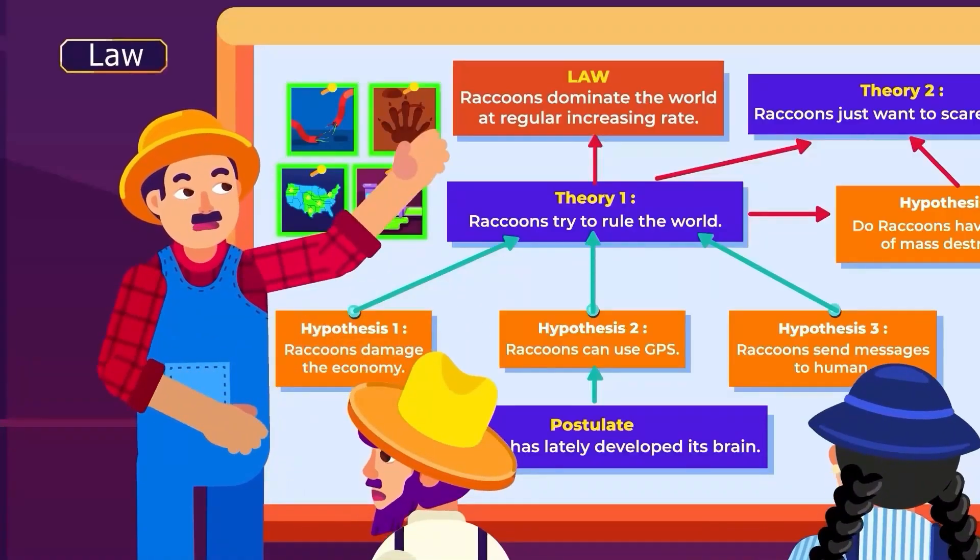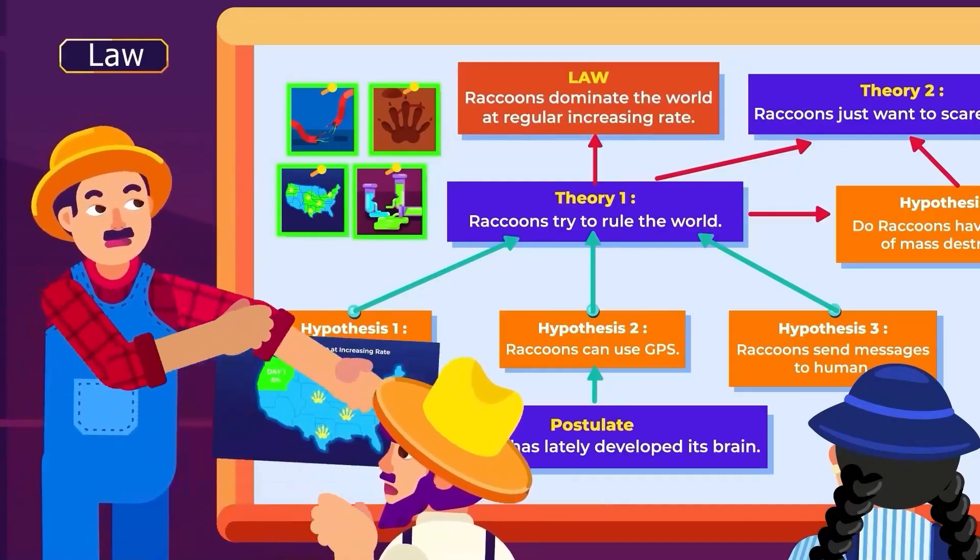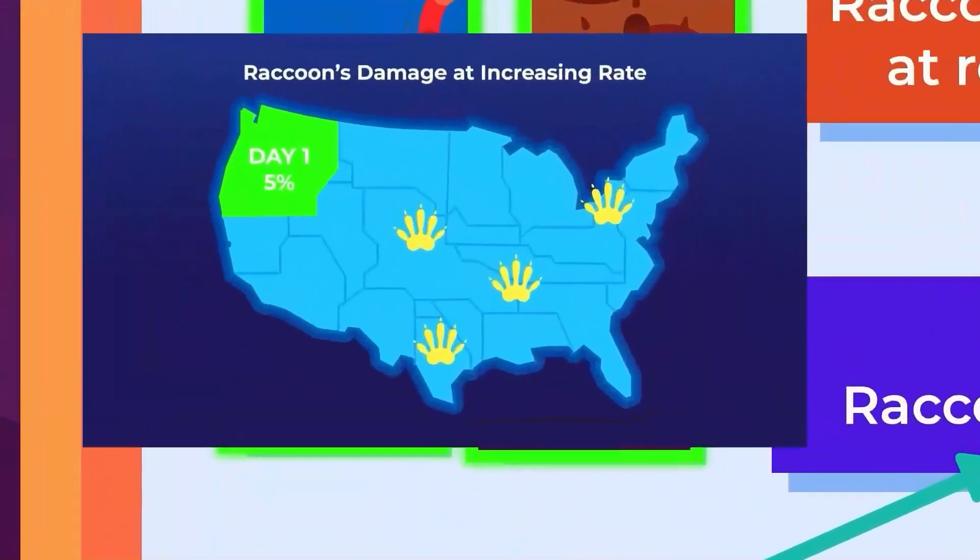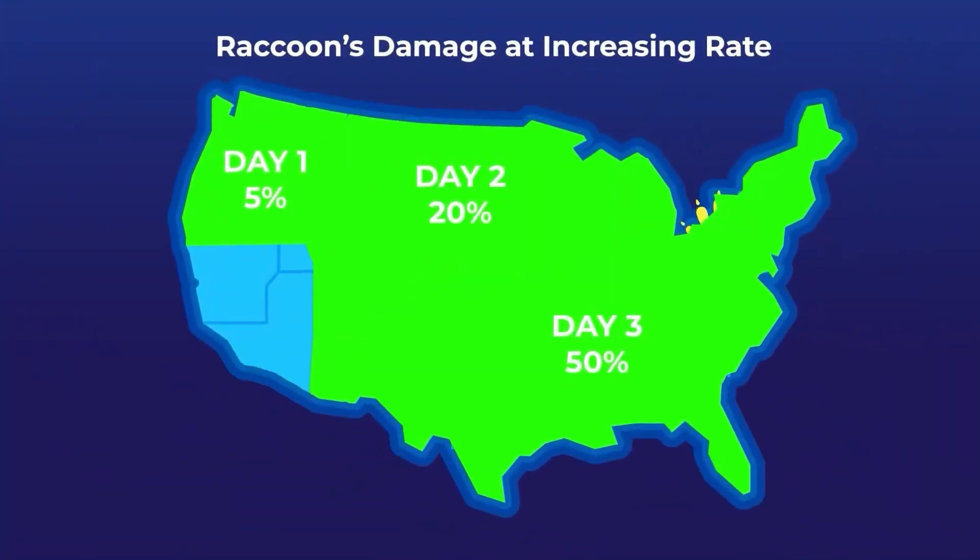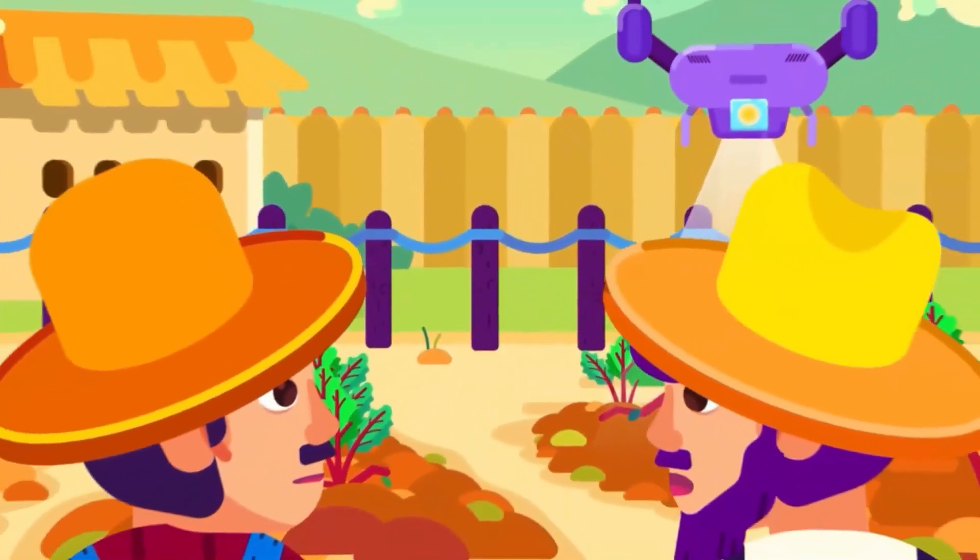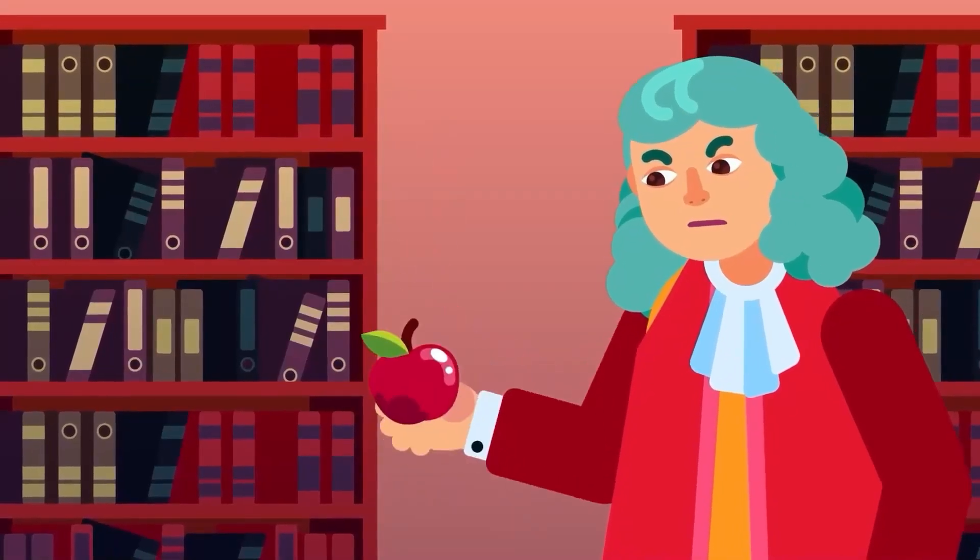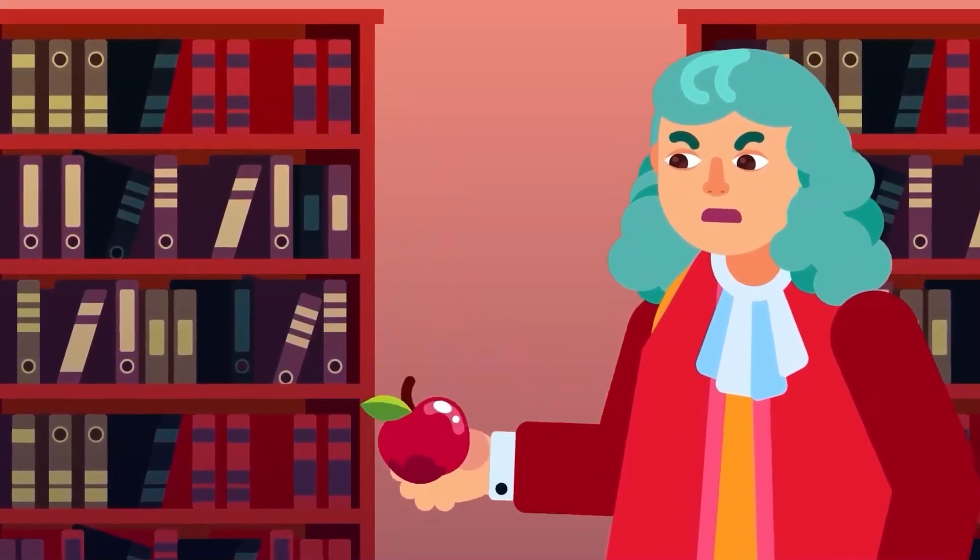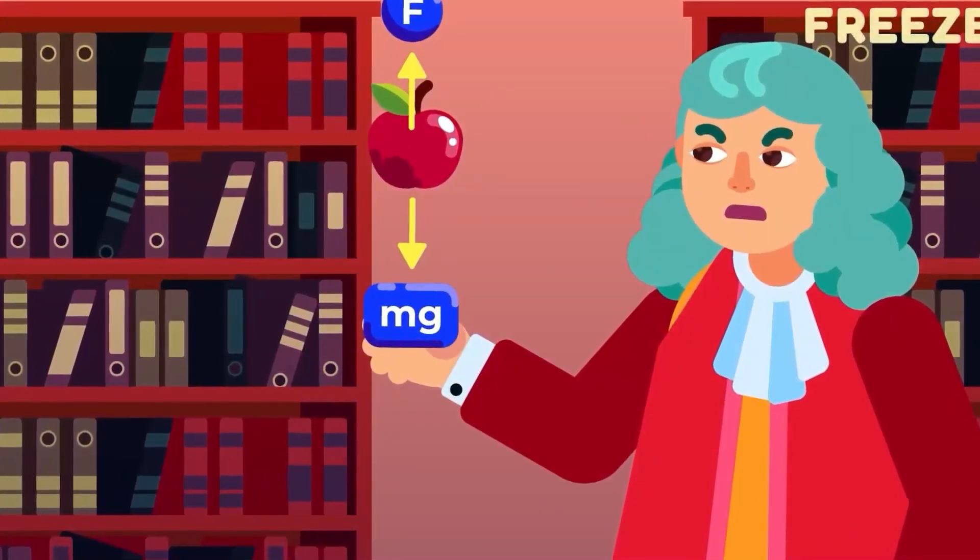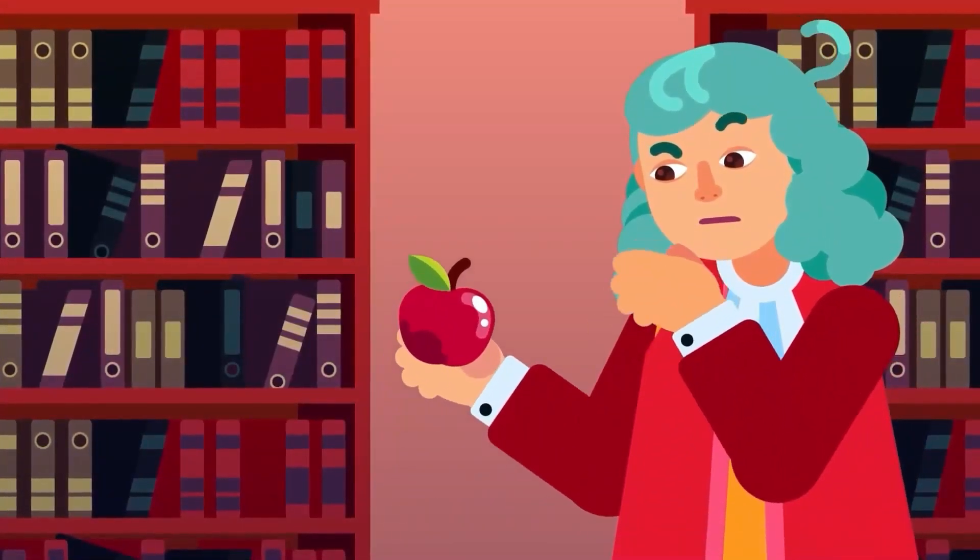Another scientific term is law. A law, or rule or principle, summarizes the inexplicable regularity or pattern of a specific phenomenon, often simplified in equations based on observations or empirical evidence. Newton's law of motion, for example, describes the relationship between acceleration, mass and force, but cannot explain why that happens.